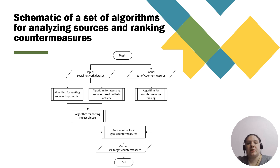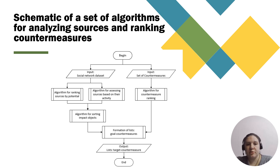The set of algorithms for analyzing malicious information sources and ranking countermeasurements consists of an algorithm for ranking the research potential of sources, estimation algorithms, and algorithms for sorting the objects of influence.